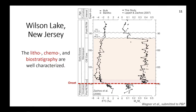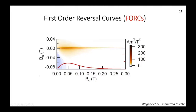That makes Wilson Lake ideal for our environmental magnetism study to tease apart magnetofossil signatures using magnetic measurements. Another reason Wilson Lake is ideal is that the litho-, chemo-, and biostratigraphy are all well characterized. To characterize the magnetofossils at Wilson Lake, we're using first-order reversal curve, or FORC, diagrams, which Andrew introduced us to earlier. Here's an example FORC diagram with coercivity on the x-axis, magnetic interaction on the y-axis, and amplitude on the far right, where warmer colors indicate a larger signal. FORC data are sensitive to the magnetization state of different magnetic assemblages and can differentiate between different populations of magnetic particles in a bulk sediment.